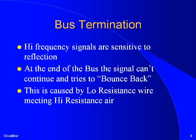A 1553 network consists of the bus controller, up to 32 RTs, possibly one or more bus monitors — which are essentially completely passive RTs — bus couplers, and terminators. Think of the bus as a long wire going from one end of the plane to the other. Periodically, a wire splits off from the main bus to attach to a BC, RT, or monitor. At either end of the bus we put a bus terminator. This terminator fools the signal into thinking that the bus continues on forever, which prevents a phenomenon called bouncing, in which the signal bounces back from the end of the wire and causes echoes on the bus.